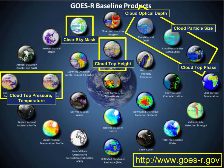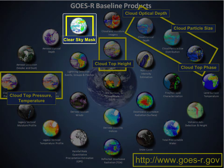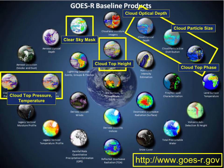The subject of this GOES-R baseline products training are the different cloud products boxed in yellow. There are a lot of them, and some, especially the cloud mask, have a big influence on other products.